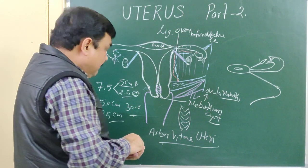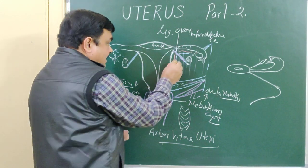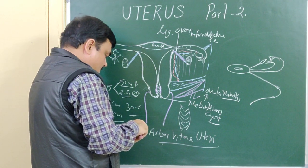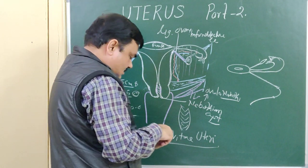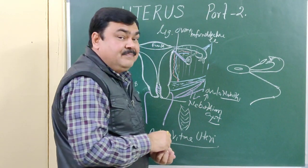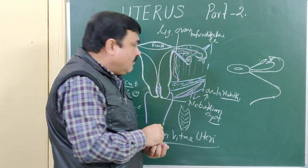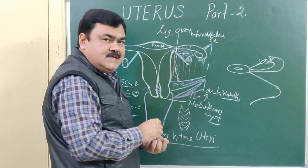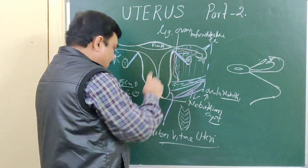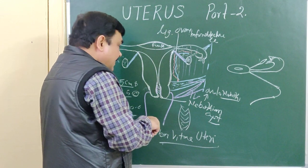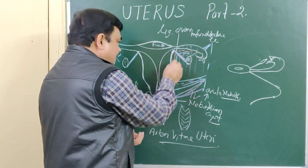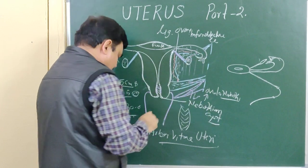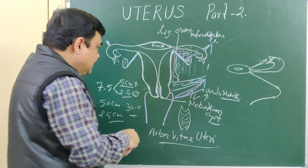The broad ligament also contains the uterine artery, uterine vein, and a nerve plexus — sympathetic from T10 to L1 and parasympathetic from S2, S3, S4. There are also lymphatic plexuses present.